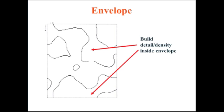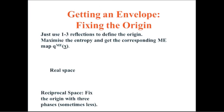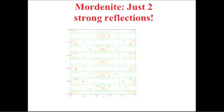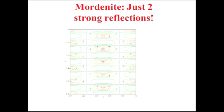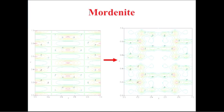If you've got envelope information, that's prior information. If you're working with maximum entropy, you can feed that into the calculation — specifically that you would like to build density inside the envelope and not outside it. You can do that with things called density building functions in a maximum overlap environment. And you can start with a low-resolution envelope and move into high-resolution data.